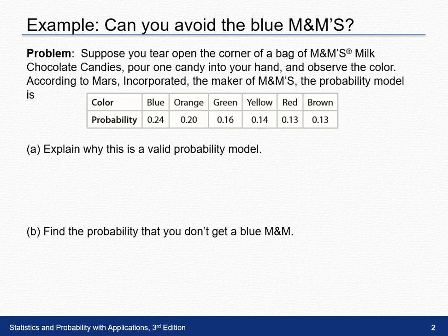What a probability model shows us is the possible outcomes along with their corresponding probabilities. So you can see the probability of getting a blue, an orange, a green, a yellow, a red, or a brown M&M.